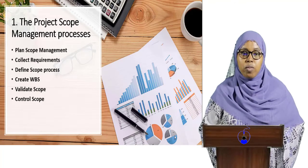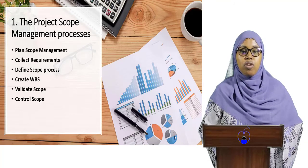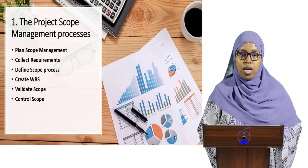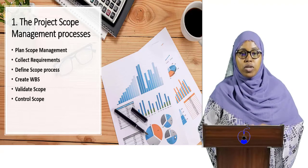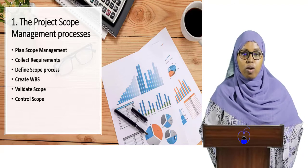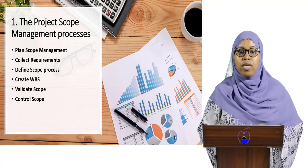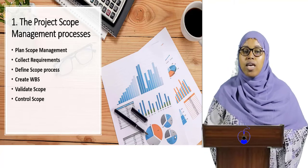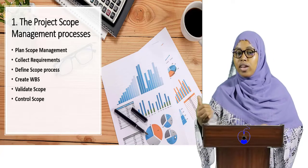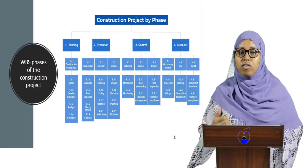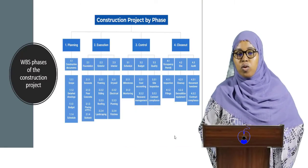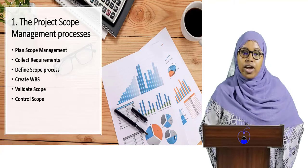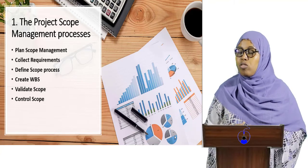Project scope management — the main purpose is to divide major deliverables into smaller, more manageable components for easy execution. You can complete scope management by collecting information requirements from the client or project team. Then the project manager can define the scope management process, and you can create a WBS. Finally, you need to make the scope control plan.